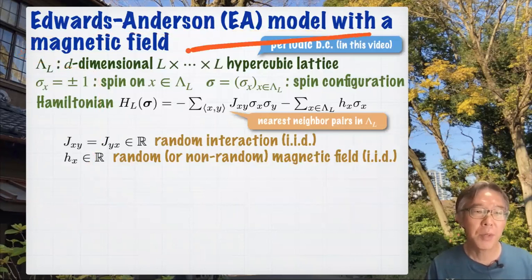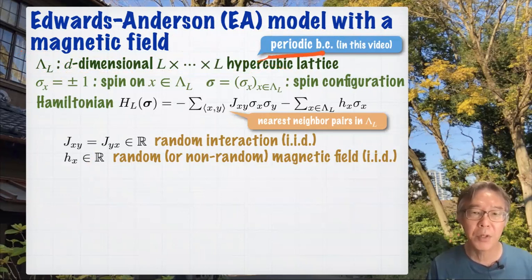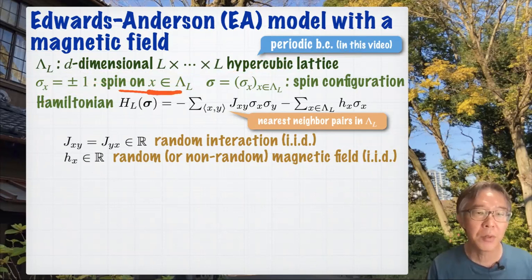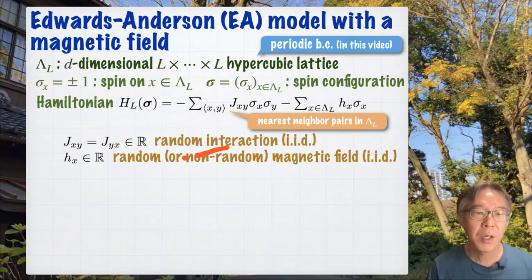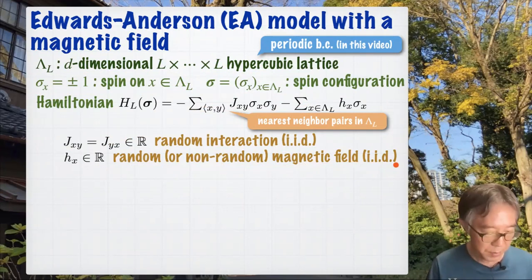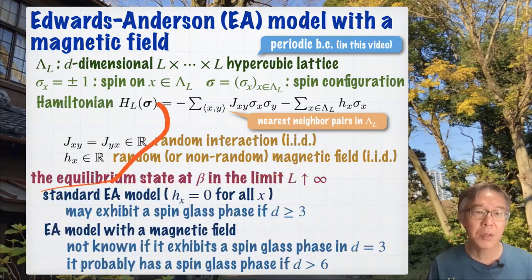We are interested in the Edwards-Anderson model with a magnetic field. Lambda_l denotes the standard d-dimensional L by L hypercubic lattice, and we mainly consider periodic boundary conditions. Sigma_x denotes the spin variable on site x taking values plus or minus one; bold sigma denotes the full spin configuration. The standard Hamiltonian has a sum over nearest neighbor pairs, where J_{xy} is an i.i.d. random interaction, and h_x is a random or non-random i.i.d. magnetic field. We study the equilibrium state at inverse temperature beta in the thermodynamic limit.